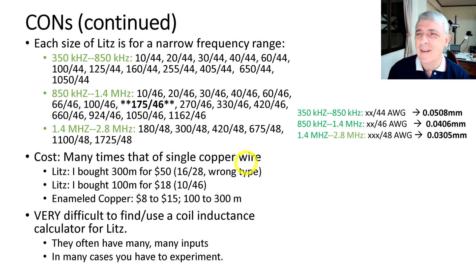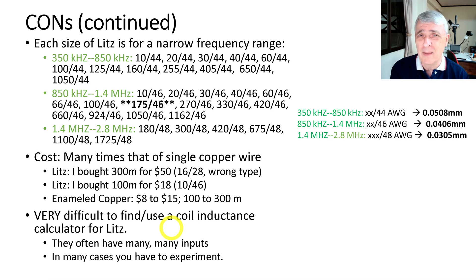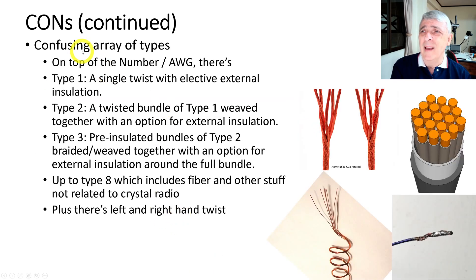The first thing I bought was 300 meters for $50 — it was 16/28, which was wrong. Then I bought the right stuff: 100 meters for $18, it's 10/46, only 10 strands because I think I can manage 10 strands — that hasn't arrived yet so I can't show you. By comparison, enameled copper wire is $8 to $15 for 100 to 300 meters — much more reasonably priced. It's also very difficult to find or use a coil inductance calculator for litz wire; the one I found had about 12 inputs and I didn't even know what half of them meant, so in many cases you just have to experiment.